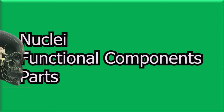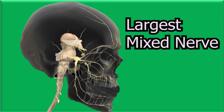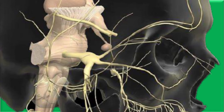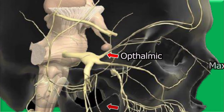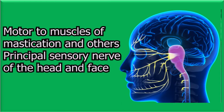Let's start with the basic information. This nerve is the largest of all the 12 cranial nerves. It's a mixed nerve, meaning it has a sensory part and a motor part, and it is predominantly sensory. There are three big parts: the ophthalmic, the maxillary, and the mandibular. This nerve is the motor nerve of all the muscles of mastication and several other muscles, and it is also the principal sensory nerve to the head and face.